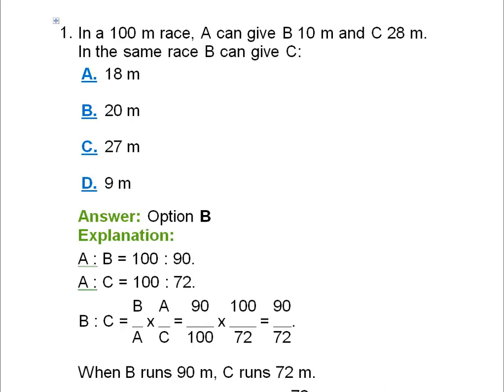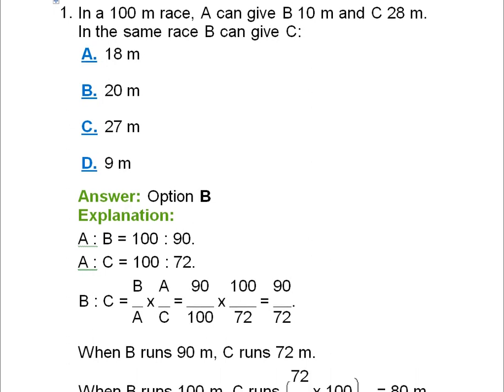Question 1: In a 100-meter race, A can give B 10 meters and C 28 meters. How much of a start can B give C? We calculate the ratio of A to B: since A can give B 10 meters, when A runs 100 meters, B runs 90 meters — so the ratio A:B is 100:90. For A to C: A runs 100 meters while C runs 100 minus 28, which is 72 meters. Now we need to calculate the ratio of B to C.